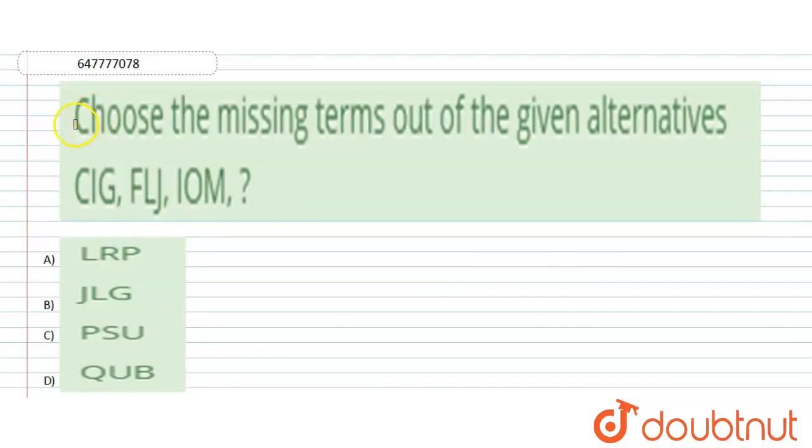The question is: Choose the missing terms out of the given alternatives. C-I-G, F-L-J, I-O-M, and then question mark. Options are L-R-P, J-L-G, P-S-U, Q-U-B.